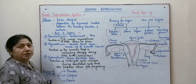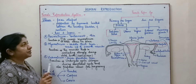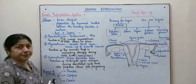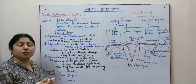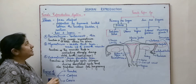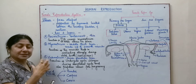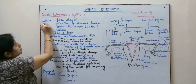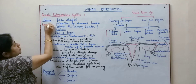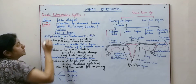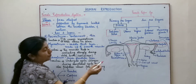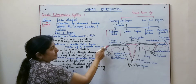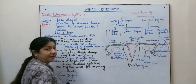In today's video, we'll be studying about another important organ, the uterus. In the human female, the uterus is an inverted pear-shaped structure. Another term used for uterus is womb, so uterus and womb refer to the same structure. As you can see here, the structure present is the uterus and the internal space is known as the uterine cavity.